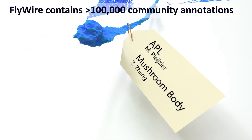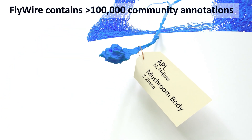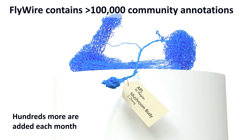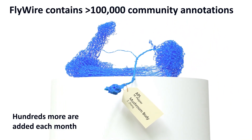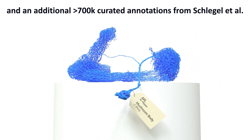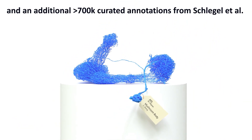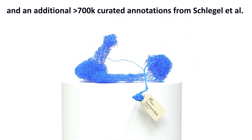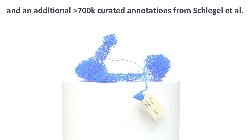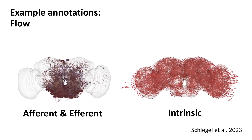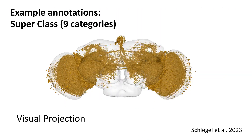Flywire also contains over 100,000 community annotations, as well as an additional over 700,000 curated annotations from Schlegel et al., and here are a few examples of those.